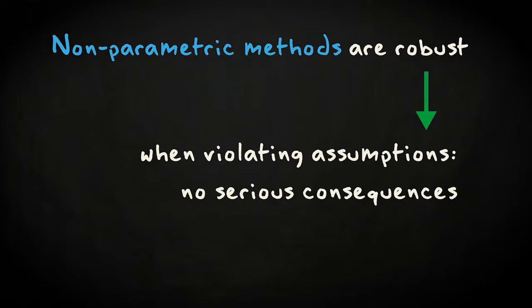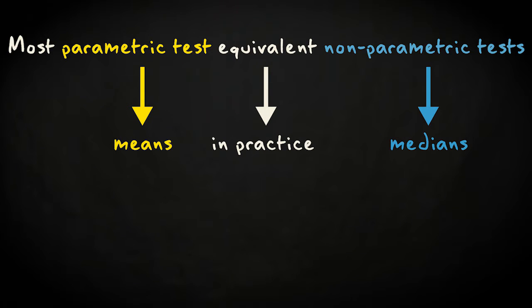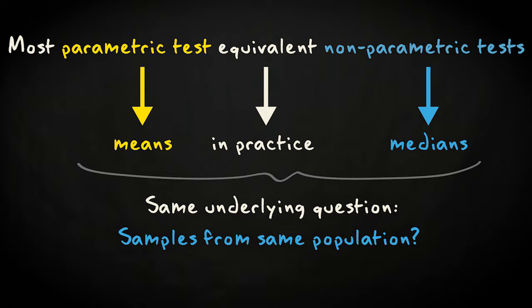For most parametric tests, there is an equivalent non-parametric test. If it's not testing exactly the same population parameter, then it is testing a parameter that is equivalent in practice. The two-sample t-test, for example, tests for a difference among two sample means. There is a corresponding non-parametric test which can test for a difference in two sample medians. The underlying question usually is whether the two samples come from the same population. And that question may be answered by testing for a difference in means as well as medians.